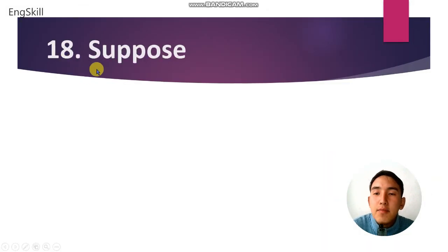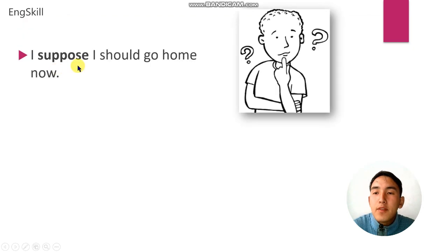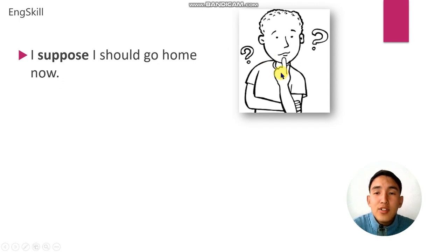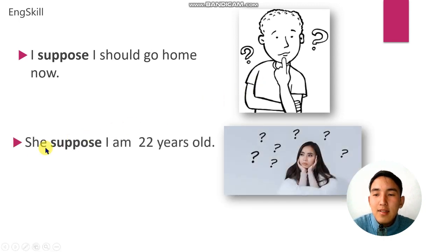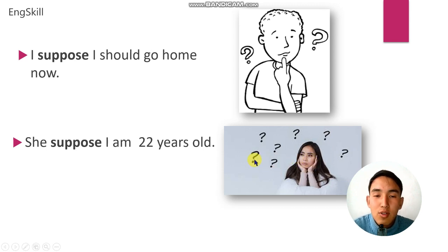Number 18 is suppose. Suppose means to guess something is true. For example: I suppose I should go home now — or we can say, I think I should go home now. Example number 2: she supposes I am 22 years old, meaning she thinks I am 22 years old.